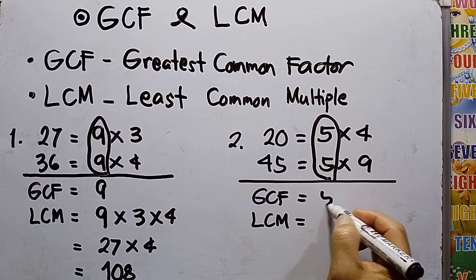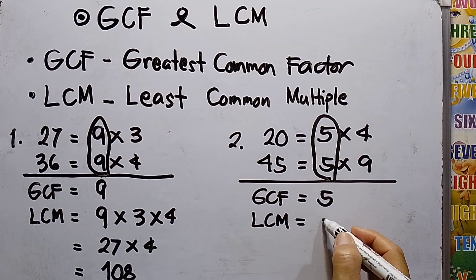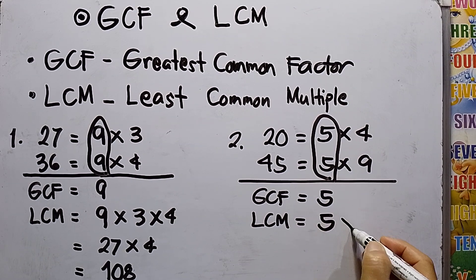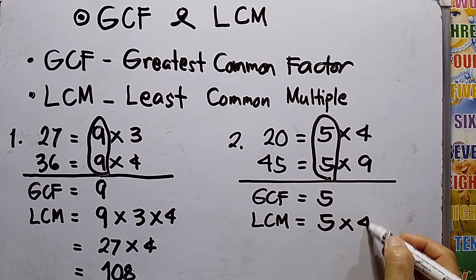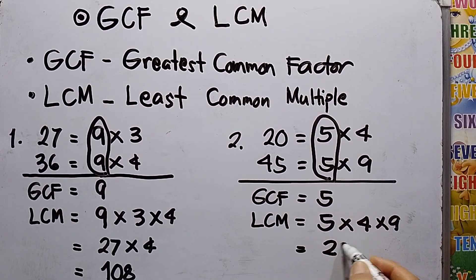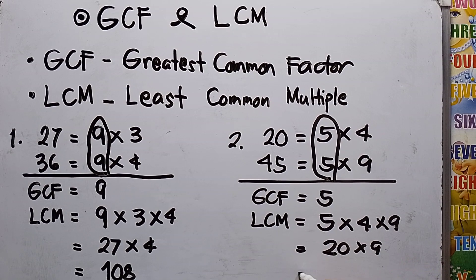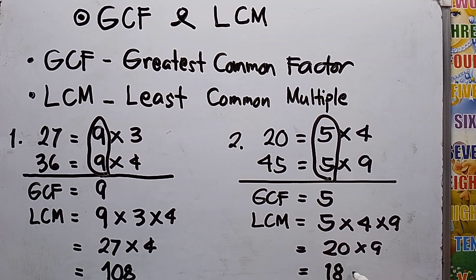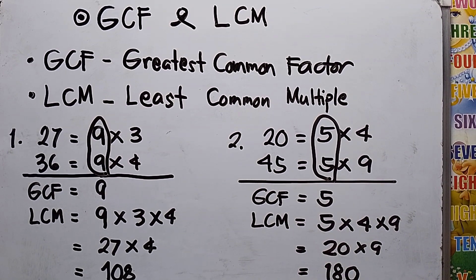How about the LCM? GCF times 4 times 9, so the answer will be 20 times 9. 2 times 9 is 18, then copy the 0. So the answer for number 2 is 180.